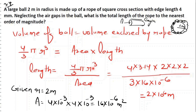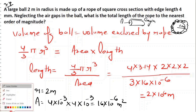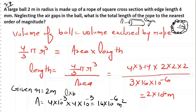Now we can calculate the length: length equals 4 by 3 pi r cubed divided by area. Solving r cubed with r equal to 2 meters, and area equals length into breadth equals 4 mm into 4 mm equals 4 into 10 to power minus 3 times 4 into 10 to power minus 3 equals 16 into 10 to power minus 6. Substituting the area value, we can get our answer.